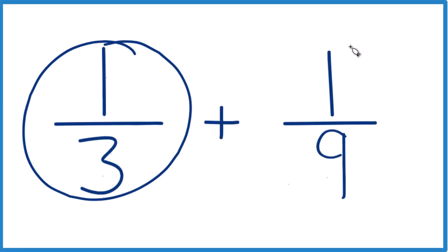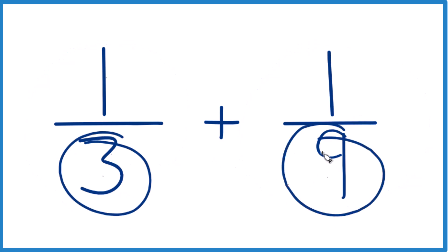If you need to add one-third plus one-ninth, here's how you can do it. What we need is to have the denominator the same. The denominators are the same, we'll just add the numerators and we'll have our answer.